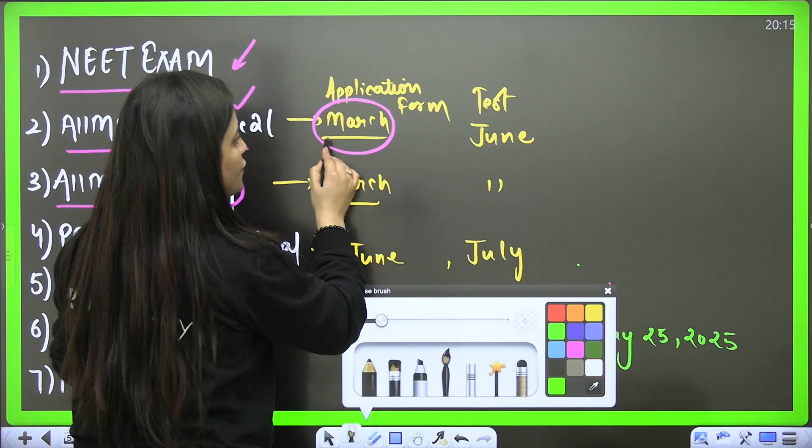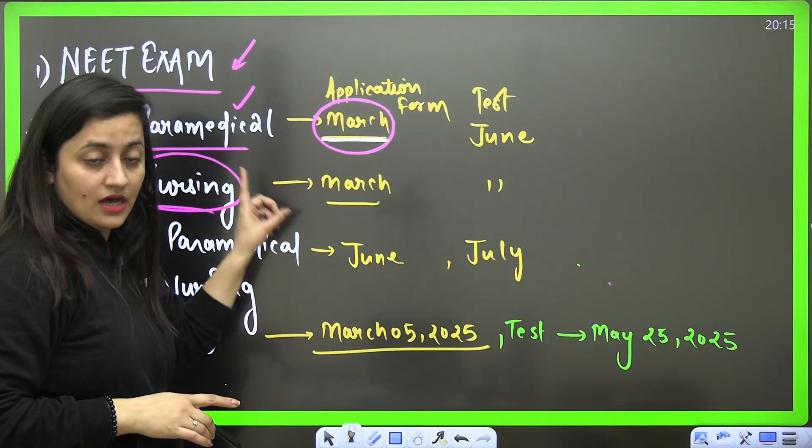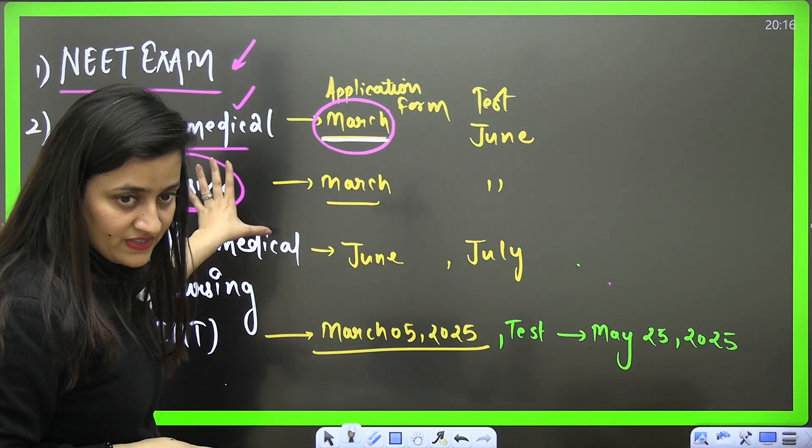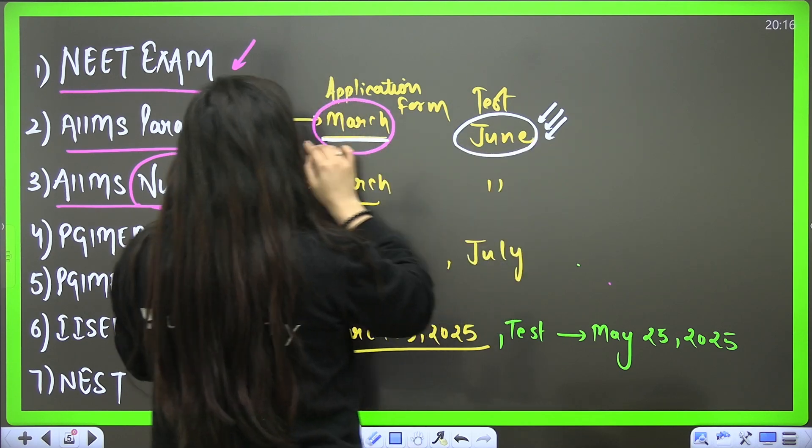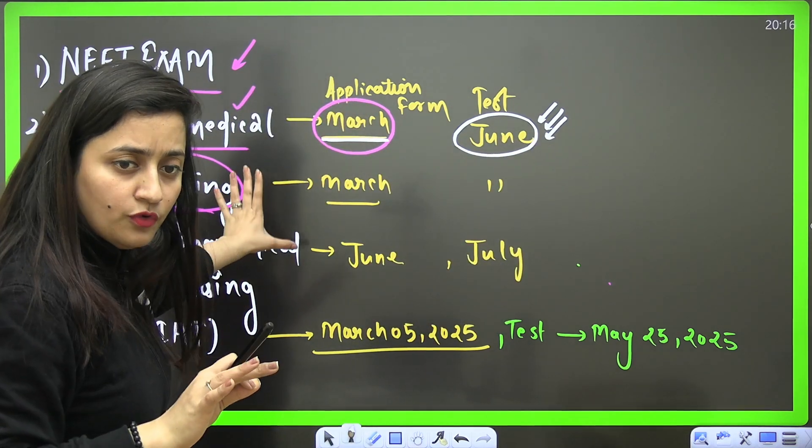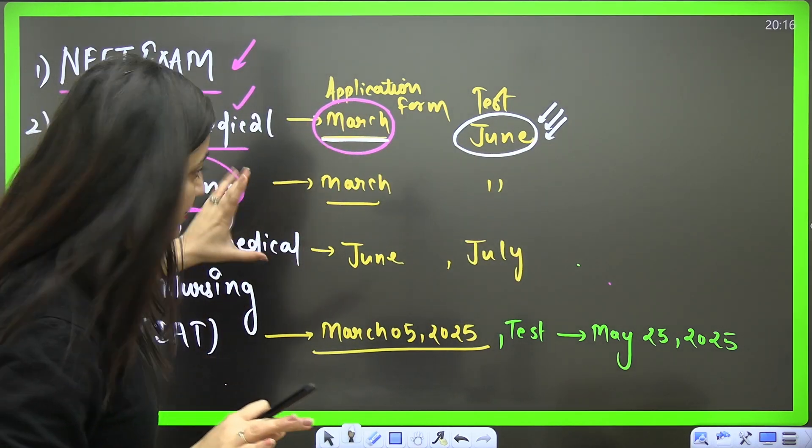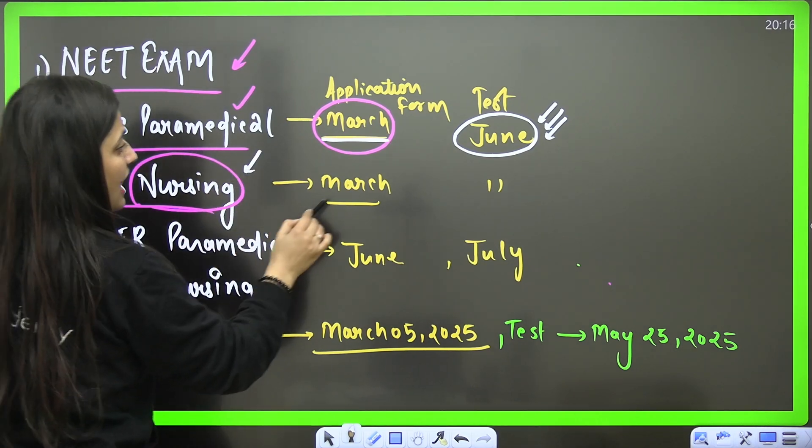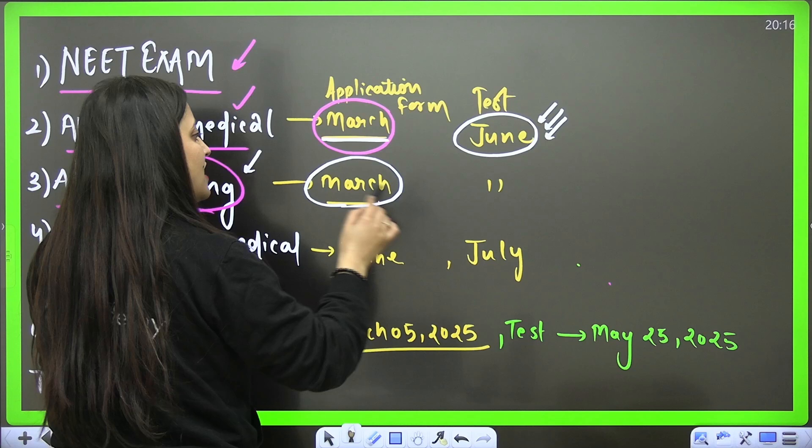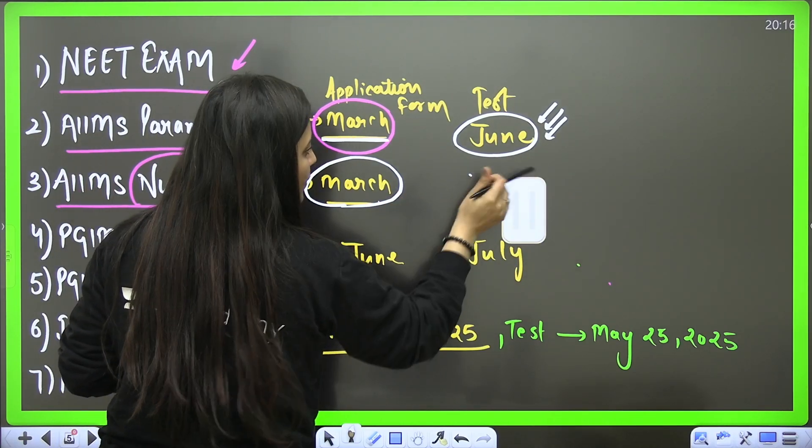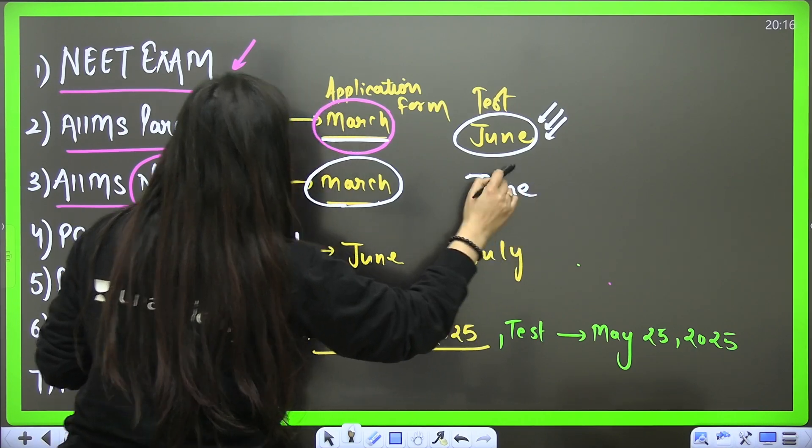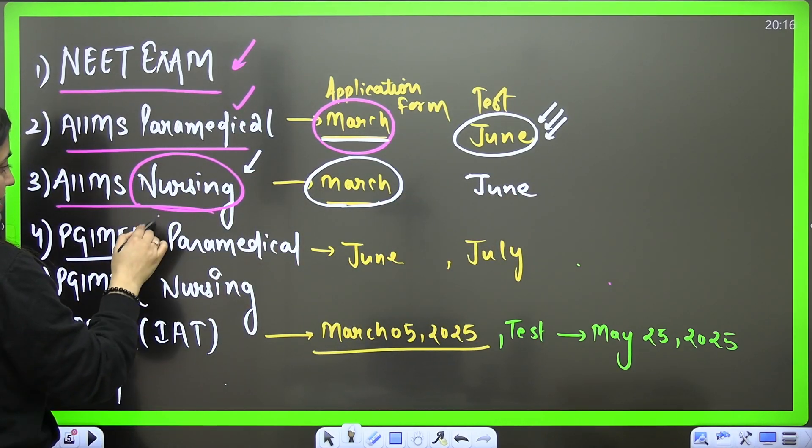You guys can check it on the app as well, on this particular website as well. And your exam will be there in the month of June. The paper format will be a little different, so if you want me to make a detailed video, do let me know in the comment section. Same for the nursing, application forms will be out in the month of March and your test will be there in the month of June. So please make sure you fill it.